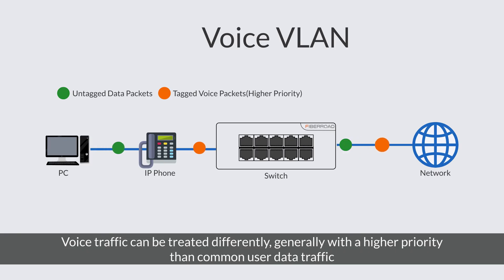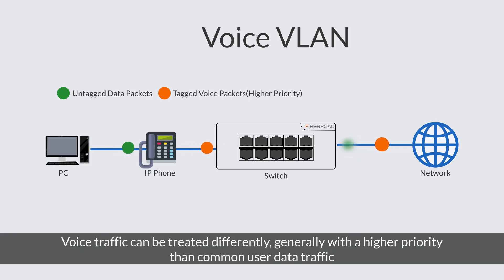The voice VLAN enables a single-access port to accept untagged data traffic as well as tagged voice traffic, and associate each type of traffic with distinct and separate VLANs. By doing this, voice traffic can be treated differently, generally with a higher priority than common user data traffic.